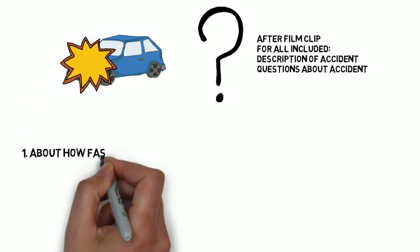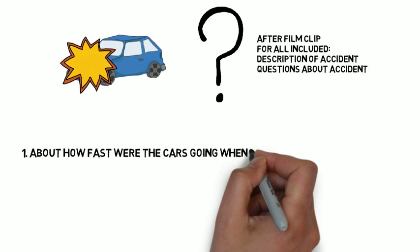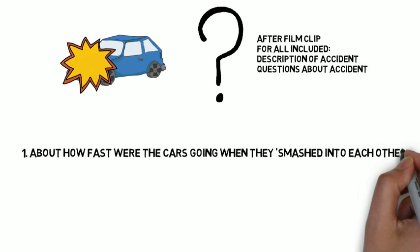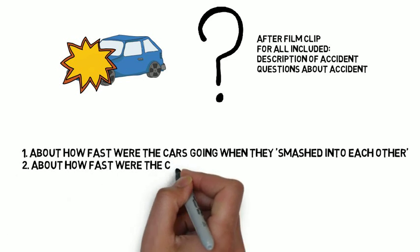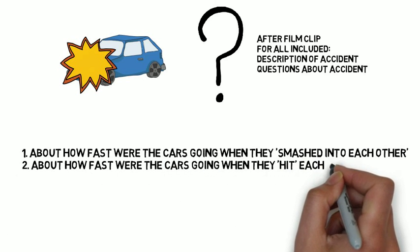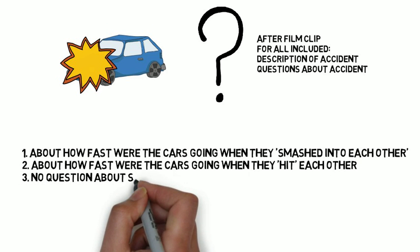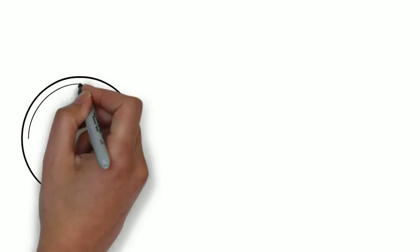But just like in experiment one, there's a very important question that was asked. Now, there's only three groups. So first group had about how fast were the cars going when they smashed. Second group had when they hit. Third group control condition. No question at all about speed.